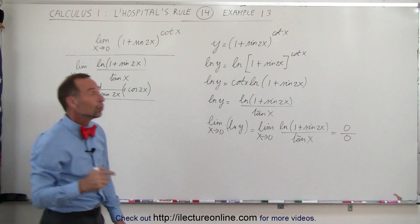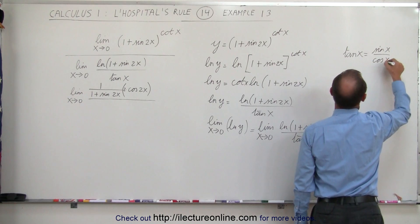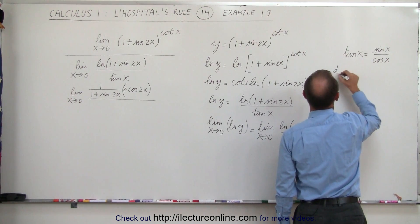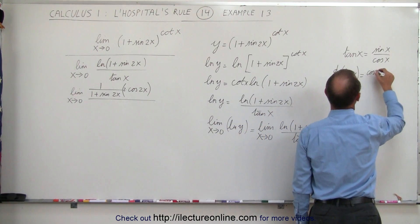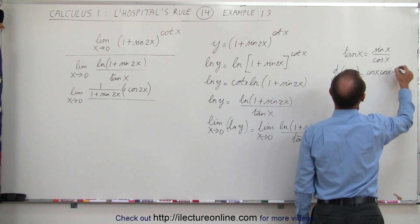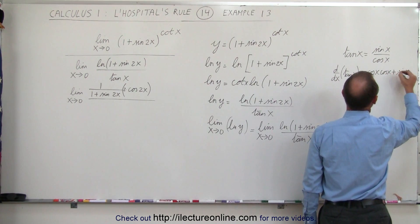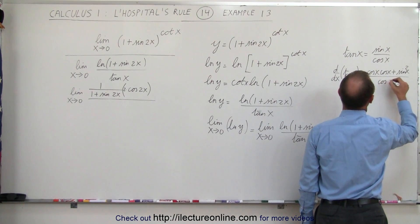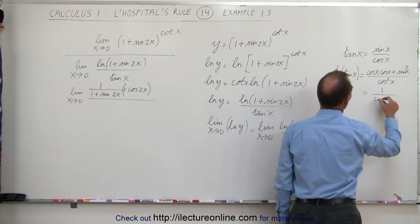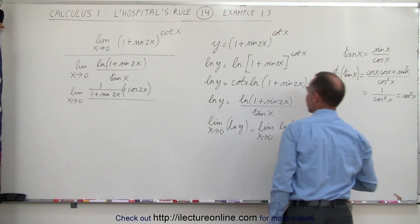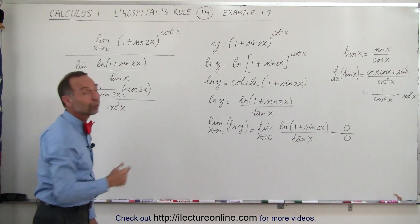If you don't remember the derivative of the tangent of x, here's how to derive it. Tangent of x equals sine of x divided by cosine of x. Using the quotient rule, the derivative is cosine of x times the derivative of sine of x — which is cosine of x — minus sine of x times the derivative of cosine of x — which is minus sine of x — all divided by cosine squared of x. That simplifies to cosine squared x plus sine squared x over cosine squared x, which equals 1 over cosine squared x — the secant squared of x.